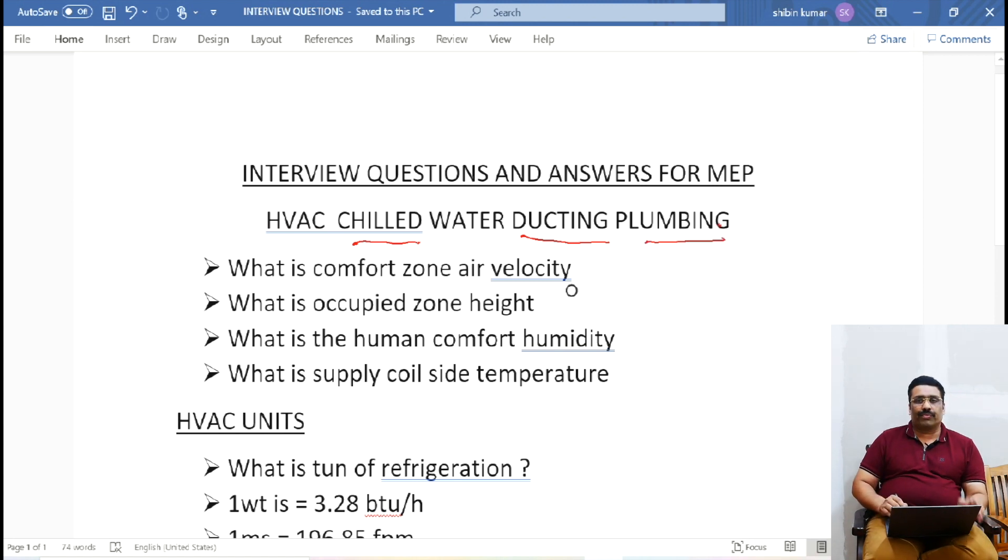Okay, so step by step we will cover many of the questions and answers. The first question is: what is comfort zone air velocity? Comfort zone air velocity means you need to understand one thing - when we are designing a grill or diffuser, or we are fixing an AC somewhere.